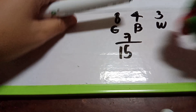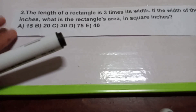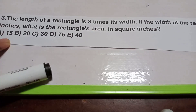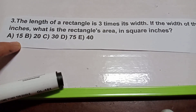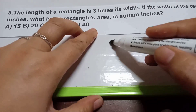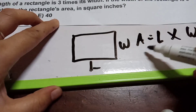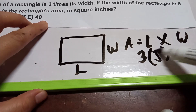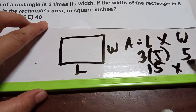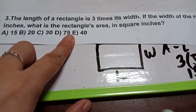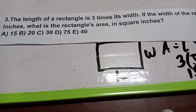Problem number three: If the length of a rectangle is 3 times its width, and the width is 5 inches, what is the rectangle's area in square inches? We know area equals length times width. The length is 3 times 5, which is 15. Then 15 times 5 equals 75 square inches. The answer is letter D, 75 square inches.